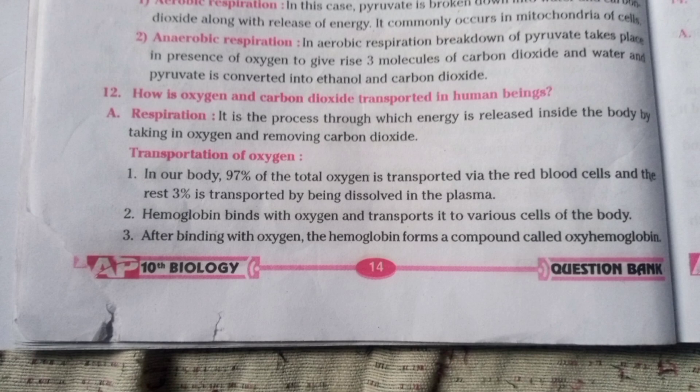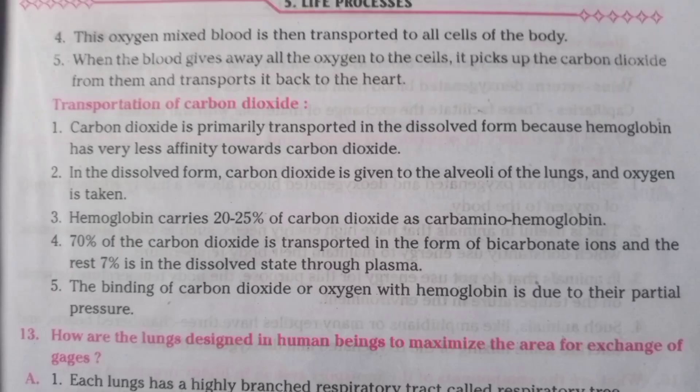How is oxygen and carbon dioxide transported in human beings? Respiration is the process through which energy is released inside the body by taking in oxygen and removing carbon dioxide. Regarding transportation of oxygen: 97% of the total oxygen is transported via the red blood cells and the rest 3% is transported dissolved in the plasma. Hemoglobin binds with oxygen and transports it to various cells of the body, forming a compound called oxyhemoglobin. This oxygen-mixed blood is then transported to all cells of the body. When the blood gives away all the oxygen to the cells, it picks up carbon dioxide and transports it back to the heart.